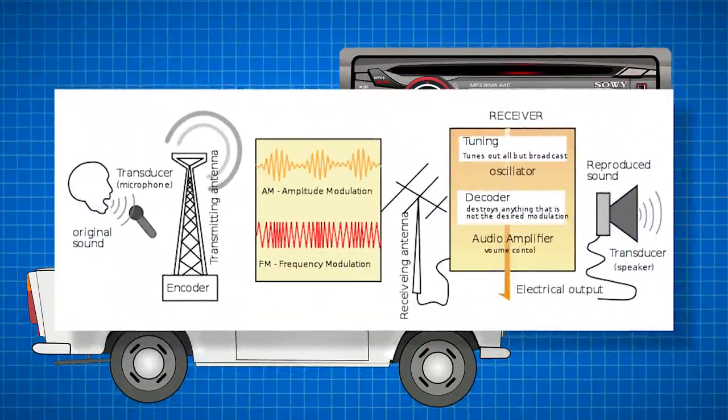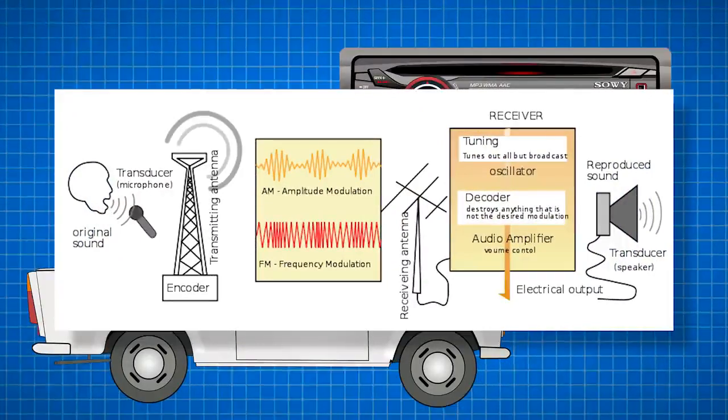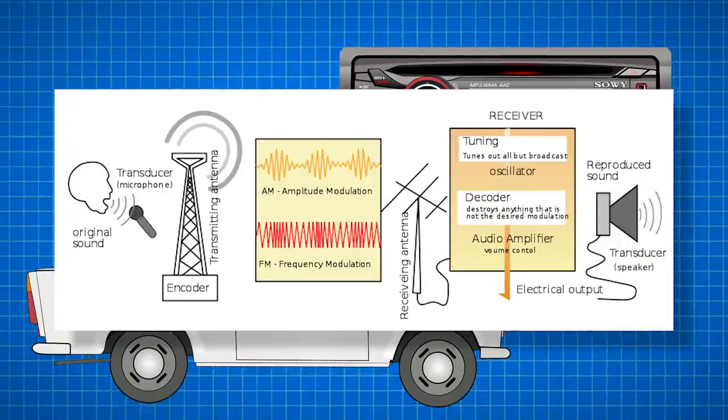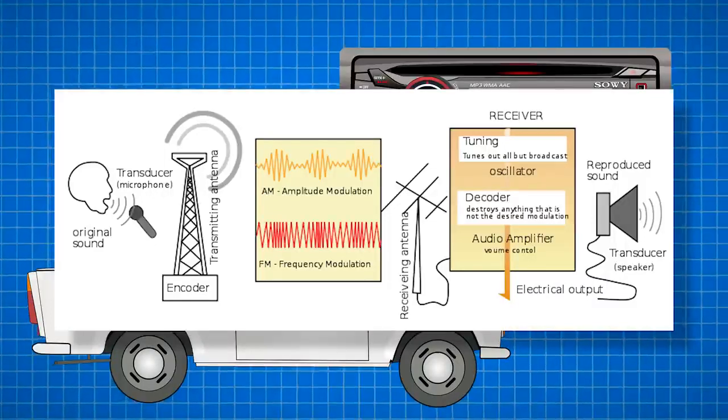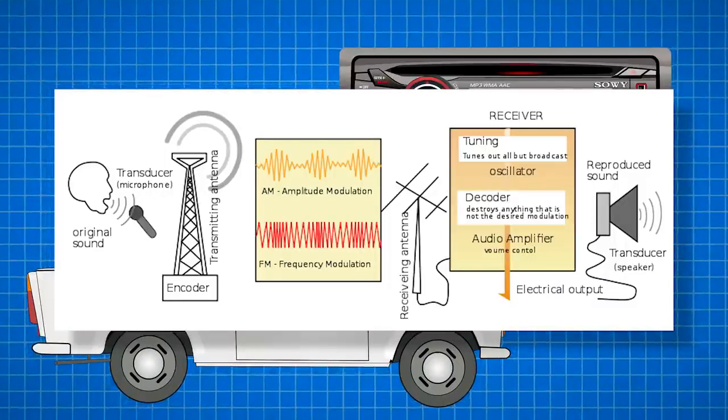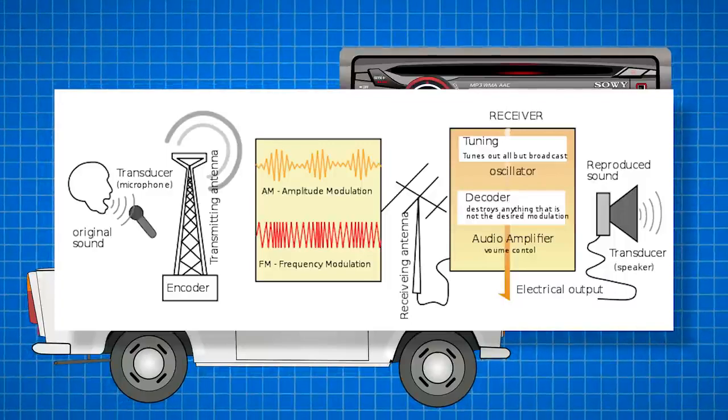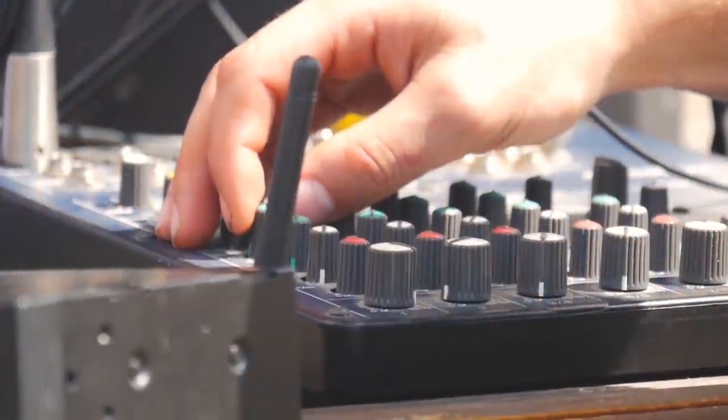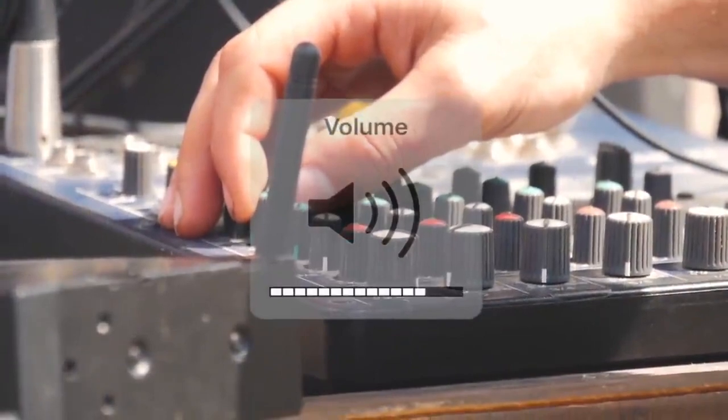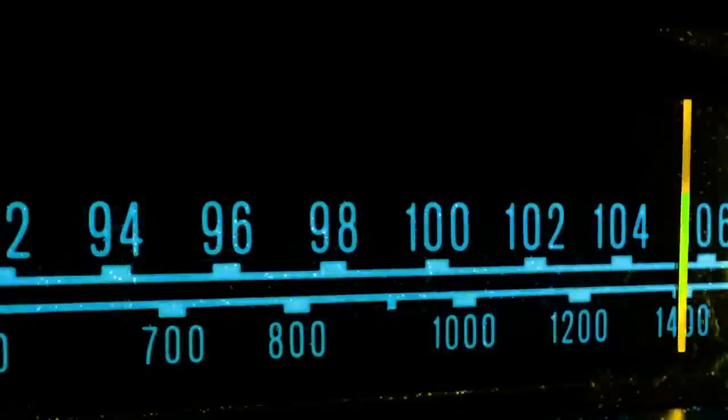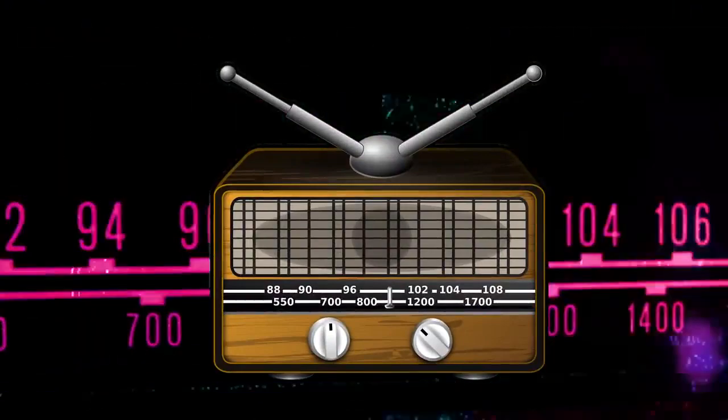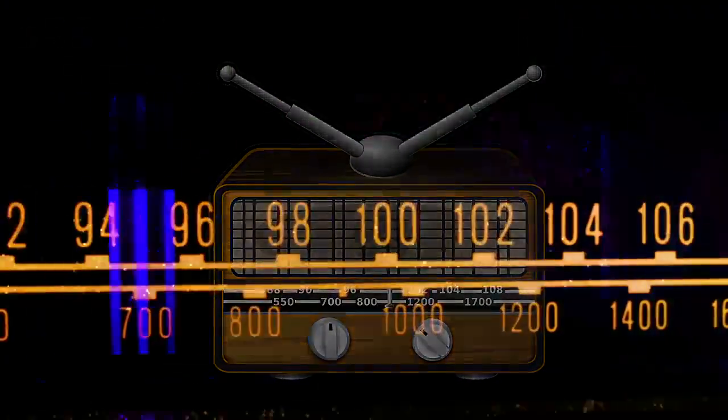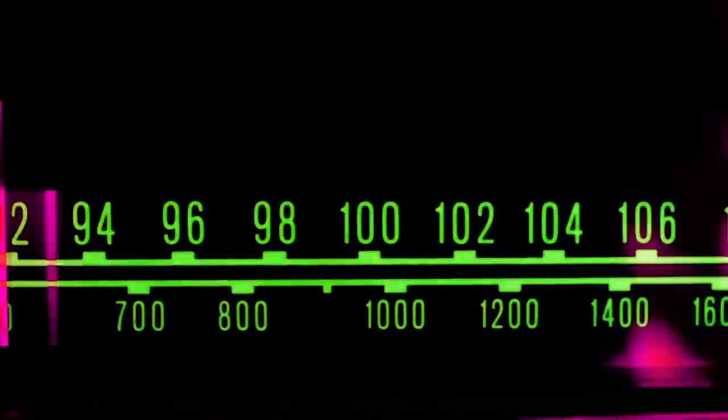The signal then passes to the detector or demodulator that takes the voice or music from the wave, utilizing a device called a diode, and translates it back into audio. The final step in the process is for the radio to amplify the signal so you can hear it and change the volume as needed. FM radios have different detector setups and translate frequency into sound rather than amplitude, but otherwise they operate in the same way.